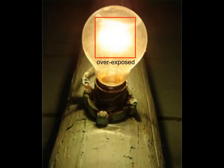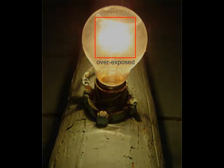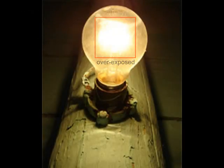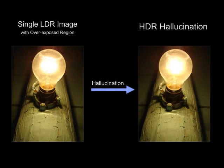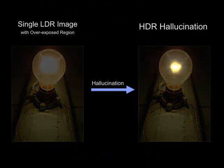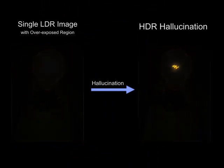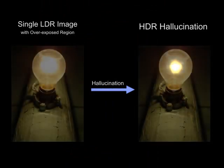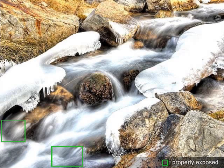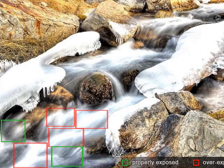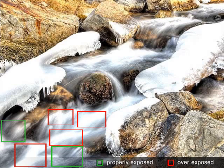Photos captured by traditional low dynamic range cameras often contain regions that are over or underexposed. In this paper, we present a technique to hallucinate high dynamic range details to these overexposed or underexposed regions. Our technique only needs the original photo as input. Our key insight is that many natural images contain high quality patches with similar textures to the regions that are over or underexposed.